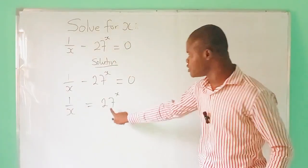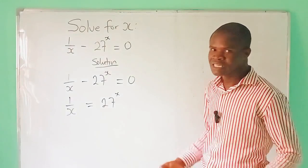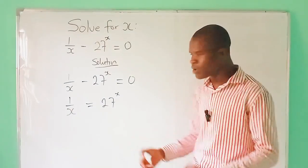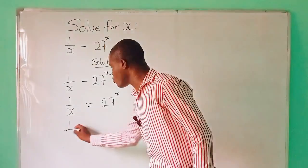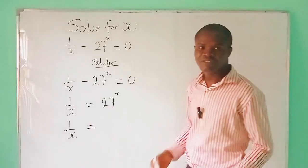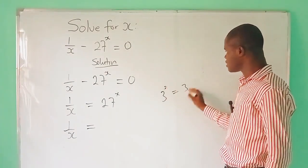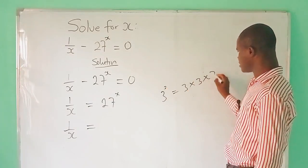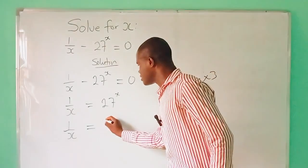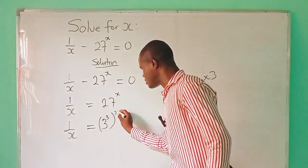The next thing to do is to express 27 in index form — that is, write 27 as a base with a power. So 1 over x is equal to 27, which is 3 raised to the power 3, meaning 3 times 3 times 3, which gives us 27.